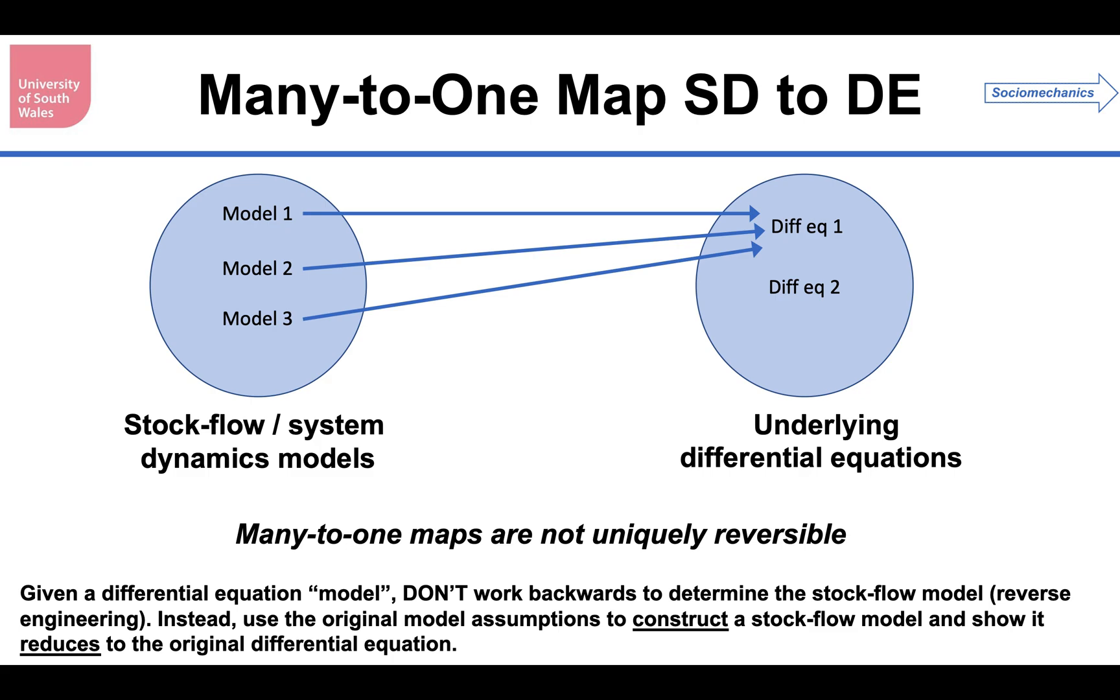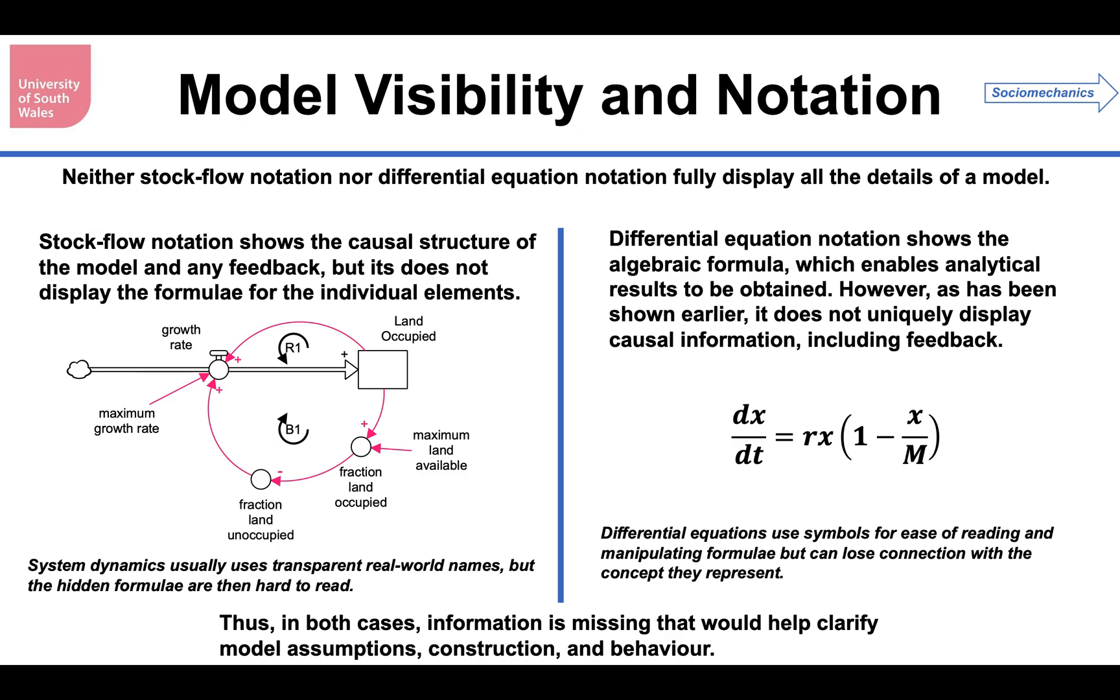So given a differential equation, don't work backwards. That is right to left on this diagram. Don't work backwards to determine the stock flow model. That's reverse engineering, and you won't get a unique answer. Instead, use the original model assumptions. If you've got a differential equation model, take those model assumptions to construct the stock flow model and show that it reduces to the original differential equation. Always when you construct a stock flow model, even if you've got a differential equation as a guide, always go back to the original assumptions to find out what causes what.